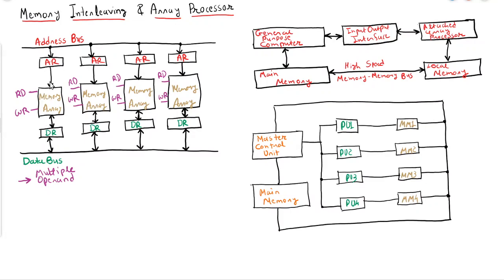While this module is writing some data into memory, at the same time if we want to retrieve another word from another module, we can provide the address into that module and simply enable the read pin, so the operand will be forwarded via the data register.